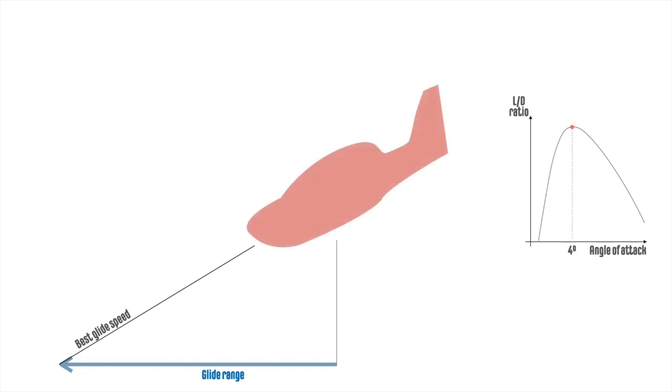Should the glide speed increase, the angle of attack will decrease to less than the optimum. The lift to drag ratio will reduce, and consequently the glide range will be shorter.